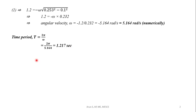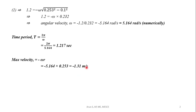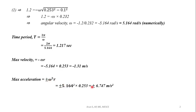The maximum velocity is given by v_max = ±rω. Substituting the values of omega and r, the maximum velocity is 1.31 m/s. The maximum acceleration is given by a_max = ±ω²r. Substituting the values of omega and r, the maximum acceleration is ±6.747 m/s².